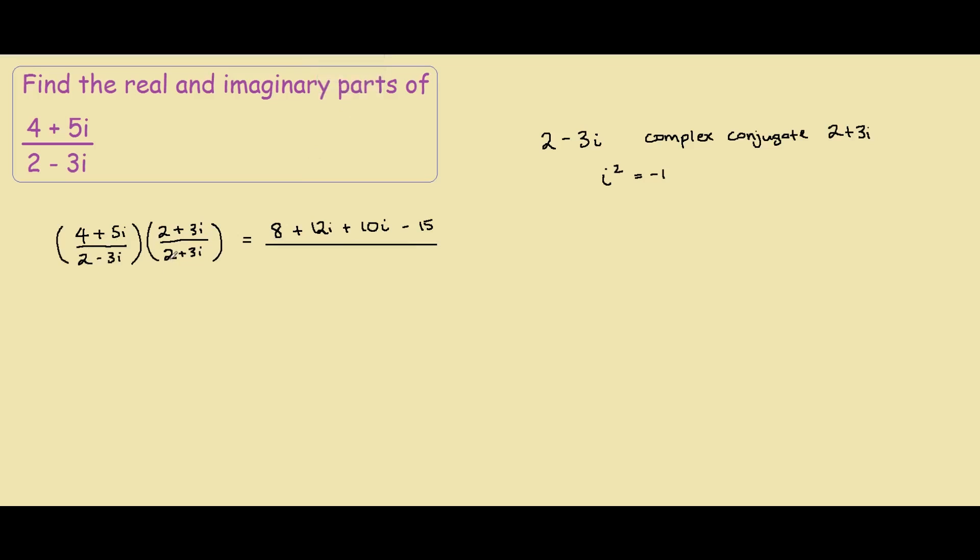On the bottom, we have 2 times 2 is 4, 2 times 3i is 6i, minus 6i, so it becomes 0. After we have minus 3i times 3i, so we have negative 9i squared, so it would be plus 9, because negative 9i squared is just 9.